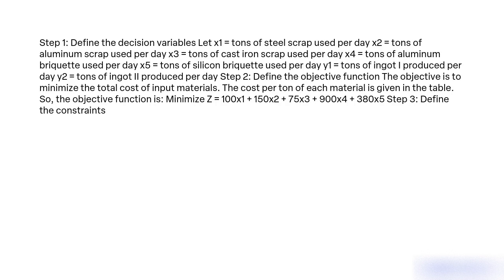Step 1: Define the decision variables. Let X1 = tons of steel scrap used per day, X2 = tons of aluminum scrap used per day, X3 = tons of cast iron scrap used per day, X4 = tons of aluminum briquette used per day, X5 = tons of silicon briquette used per day.